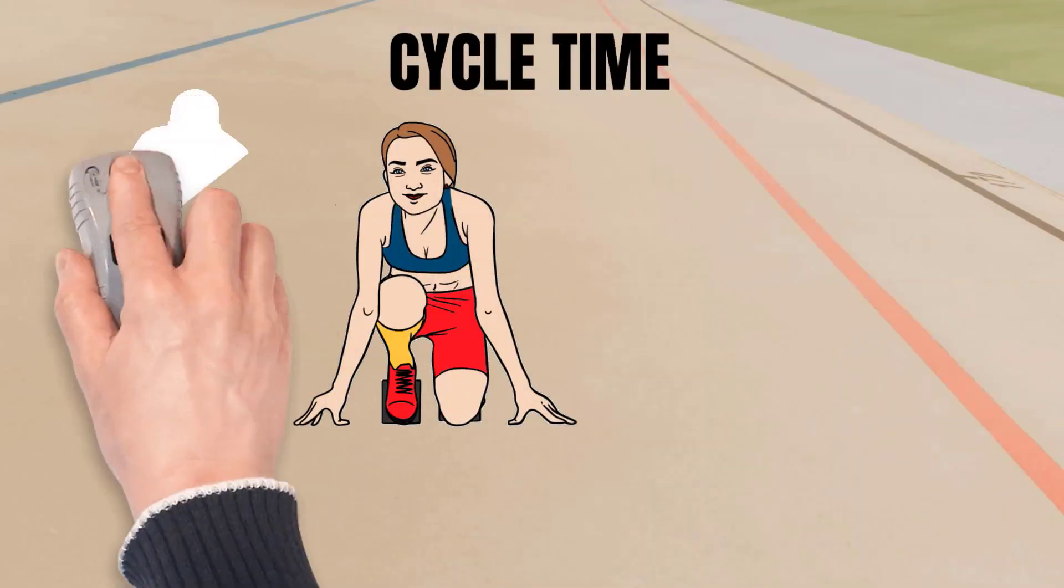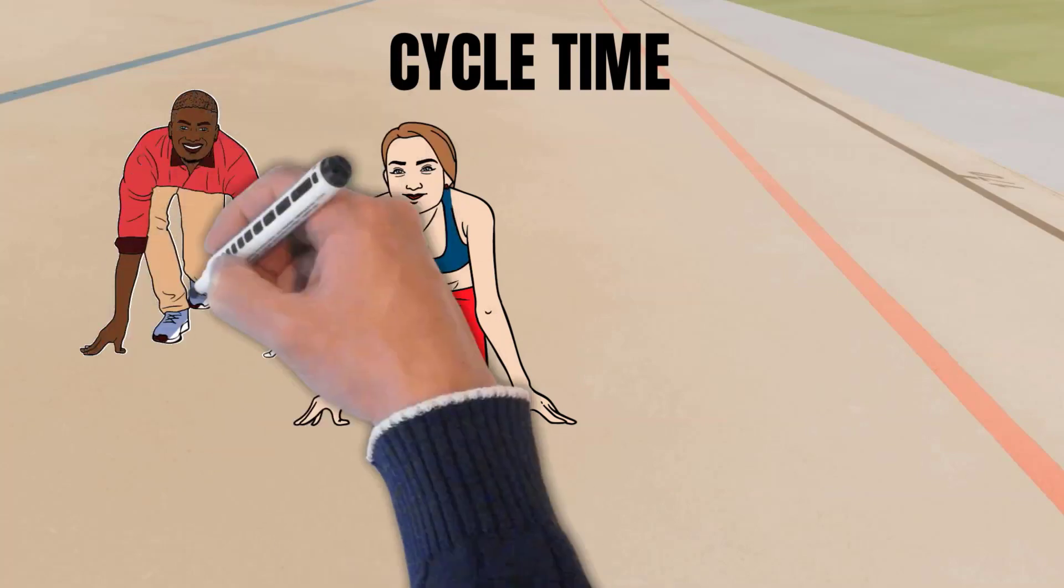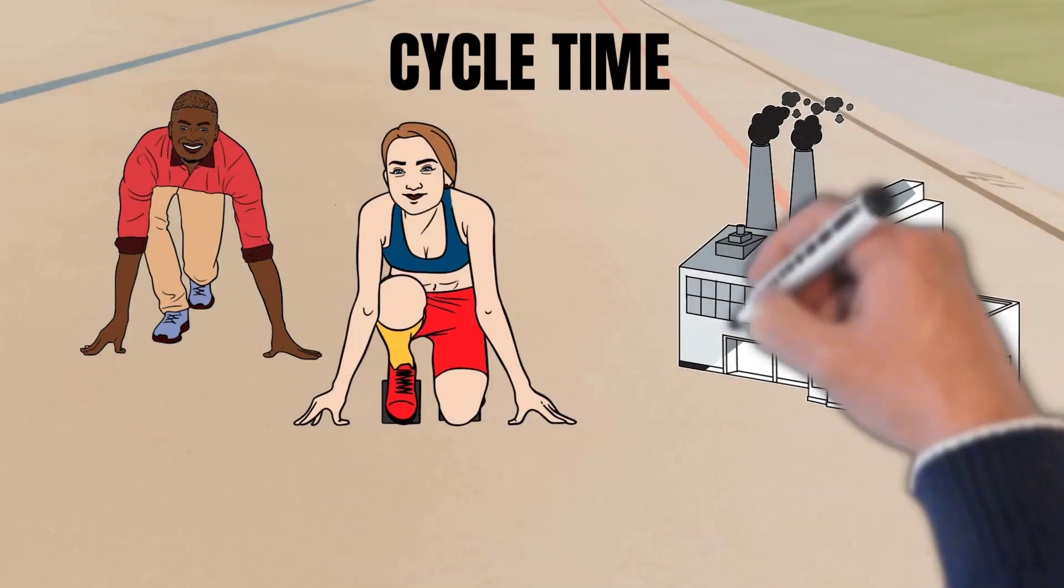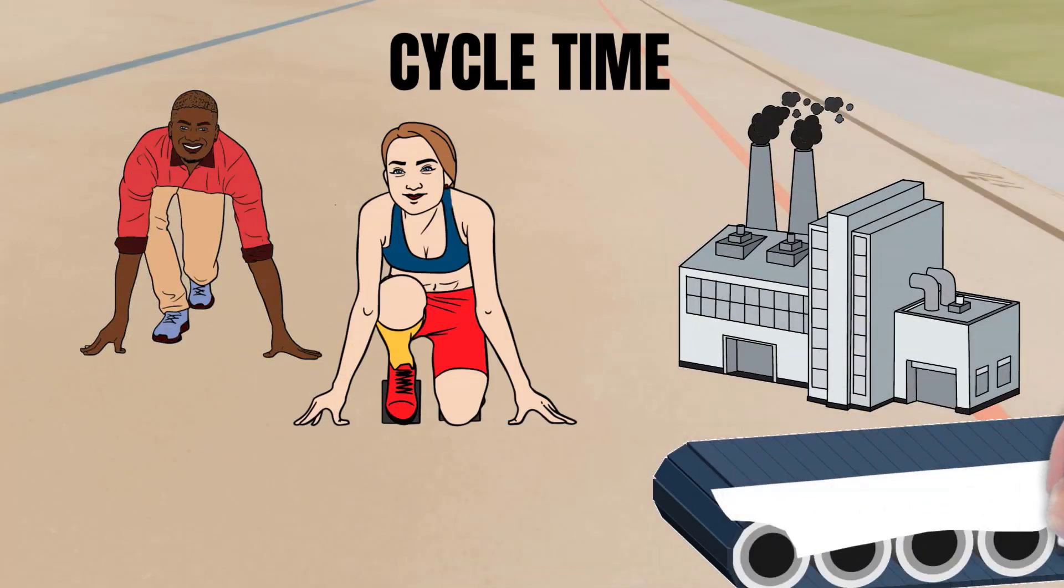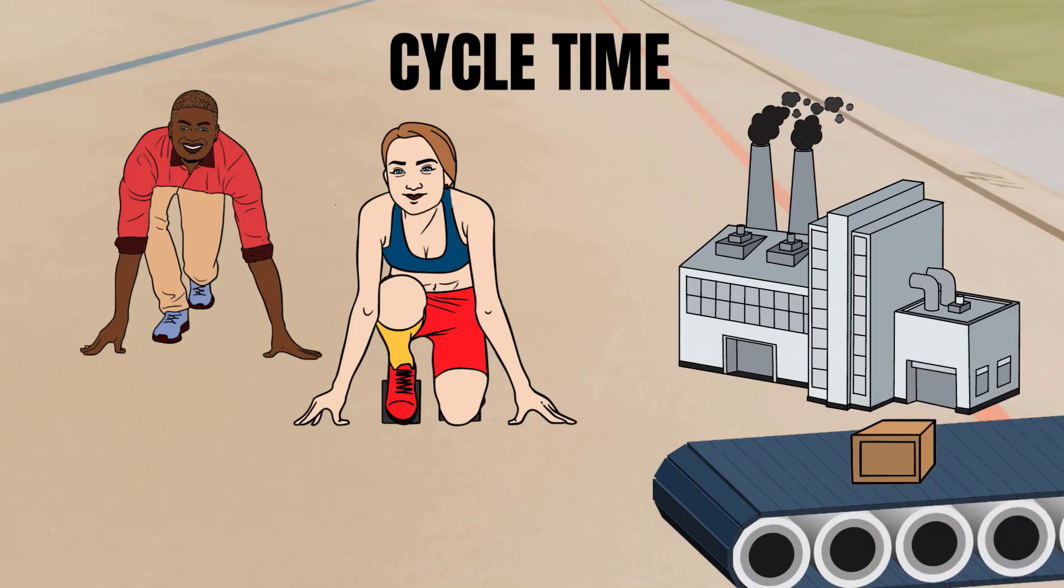Next up on our journey through manufacturing KPIs is cycle time. Think of cycle time like timing a runner in a race, but instead of a runner, it's a product, and instead of a racetrack, it's the journey through the manufacturing process.